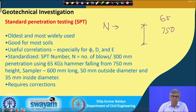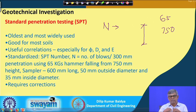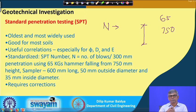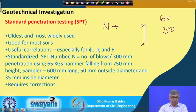The sampler is hollow, and while penetrating under the falling weight it collects a soil sample. That soil sample is used for classification purposes such as grain size, unit weight, moisture content, and consistency limits. Because of these advantages, the SPT test is very, very popular.